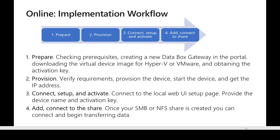For the online workflow: create a new Data Box Gateway in the portal, then create a virtual appliance on either Hyper-V or VMware. Next, provision the device and start it to get an IP address. Once you have the IP address, launch the local UI for configuration. Provide the activation key from the first step, and then you can use different protocols like SMB or NFS to add data. The gateway will send the data to the cloud. That's all about Data Box, thank you very much.